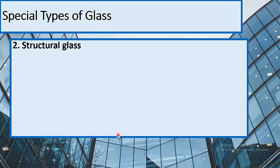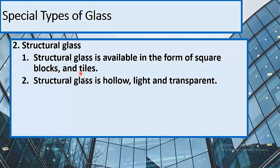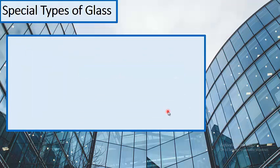The second special type of glass is structural glass. Structural glass is available in the form of square blocks and tiles. It is hollow, light, and transparent. Structural glass can be sawn, placed, and drilled like woodwork, in spite of having the general properties of glass.